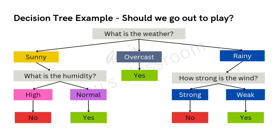For basic understanding of what a decision tree is, consider this example: Should we go out and play? That is our decision problem. One of the first things to consider is the weather. Three options: sunny, overcast, or rainy. If it is sunny, check how humid it is — high humidity means no, as you might sweat a lot; normal humidity means yes. If it is overcast, you might go and play. If it is rainy, look at how strong the rain is — strong wind or thunderstorms means no; if it is a light drizzle that might pass in 15-20 minutes, then yes you plan to go out. This is a simple example of a decision tree.